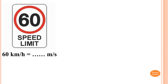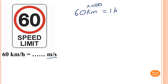60 kilometers per hour means 60 kilometers is equal to 1 hour. We want meters per second, so we need to convert to meters first. You multiply by 1,000 because 1 kilometer is 1,000 meters. So therefore, we need to times by 1,000 to convert to meters. So 60,000 meters equals 1 hour. But 1 hour is 60 minutes.